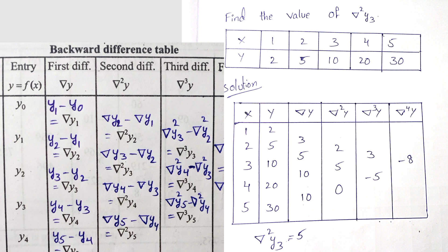Nabla cube y3 value, 5 minus 2 equal to 3. Next nabla cube y4 value, 0 minus 5 equal to minus 5. Next nabla power 4 y4 value, minus 5 minus 3 equals minus 8.